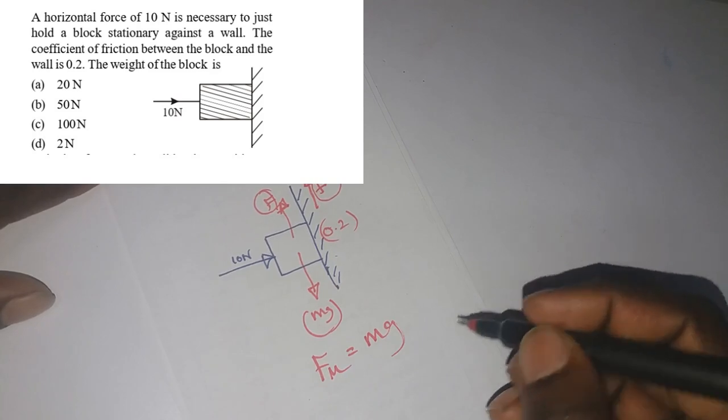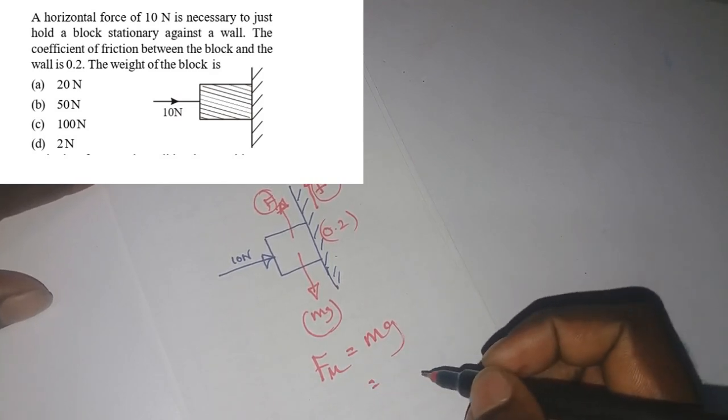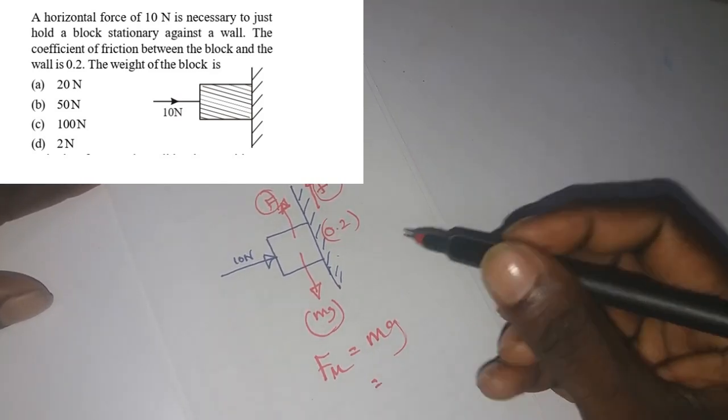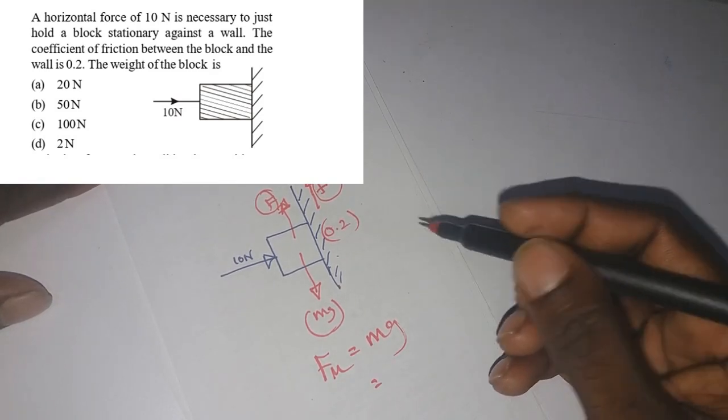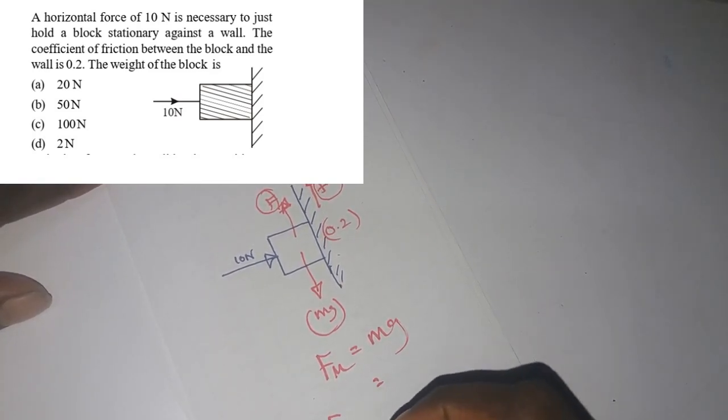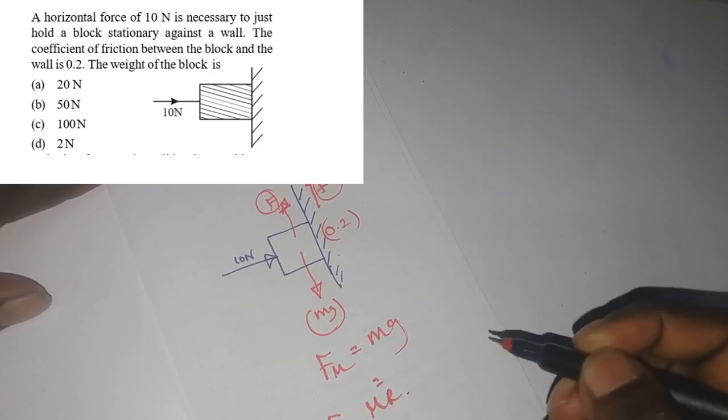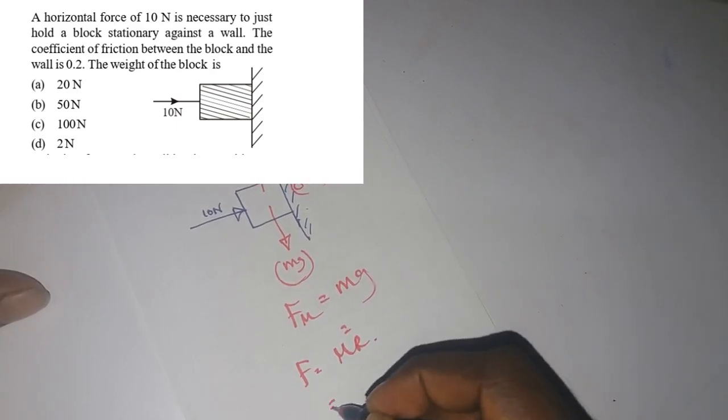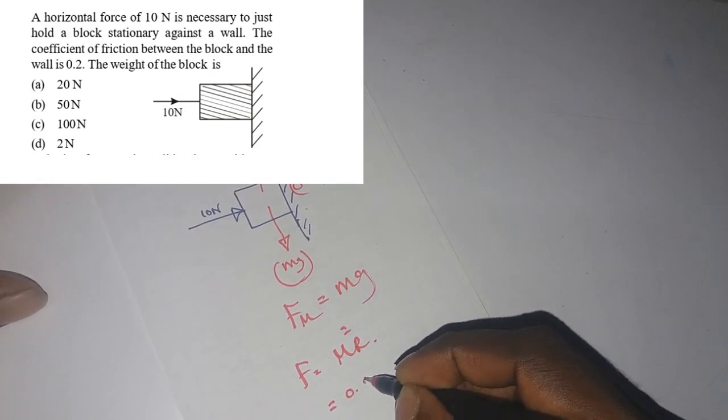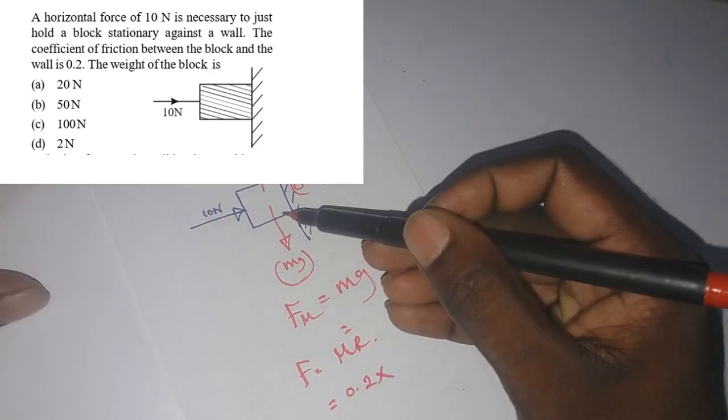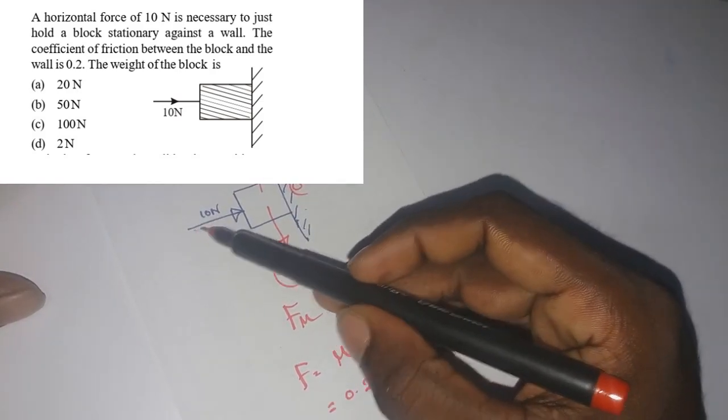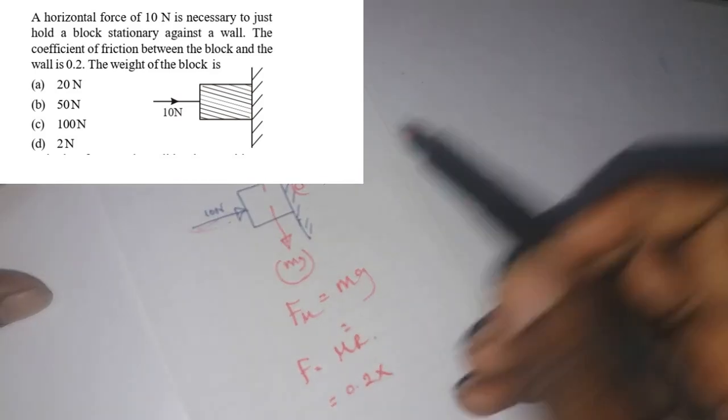Right, that is what we need to find. So let's find the value of maximum frictional force. Normally the equation is f equals mu R, and mu is given as 0.2, and R here - this shows there's a force in horizontal direction 10 newton.